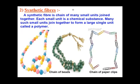Now let us discuss synthetic fibers in a little more detail. How are these synthetic fibers made? They are made up of some chemicals. The individual chemical units they are made from are called small units. Many such small units combine together to form a long chain-like structure. As you can see here, two examples are given — one is a chain of beads and one is a chain of paperclips.